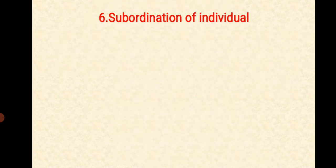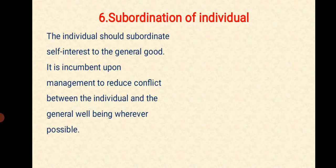And the next one is Subordination of Individual. The individual should subordinate self-interest to the general good. It is incumbent upon management to reduce conflict between the individual and the general well-being wherever possible. This indicates a company should work unitedly towards the interest of a company rather than personal interest. Be subordinate to the purposes of an organization. This refers to the old chain of command in a company.